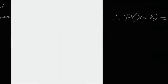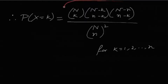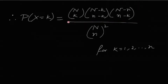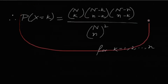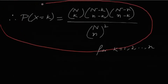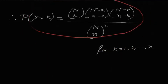Since this is a classical probability problem, P(X = k) equals the number of favorable sample pairs divided by the total number of possible sample pairs. This gives us the PMF of X: P(X=k) = [N choose k · (N−k choose n−k) · (N−n choose n−k)] / (N choose n)². This is the answer to the first question.